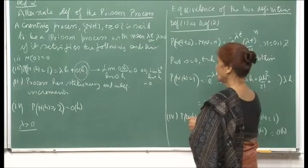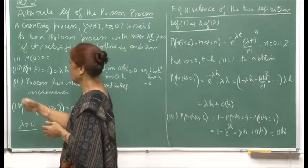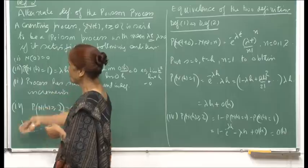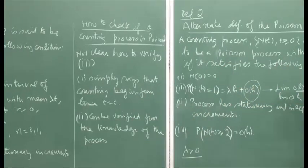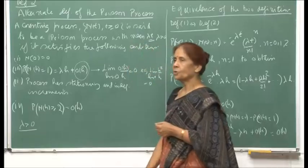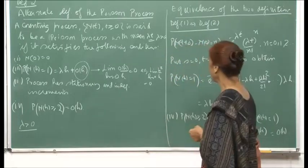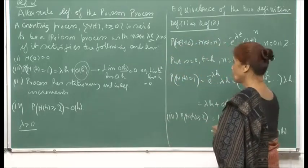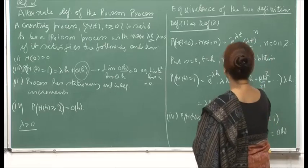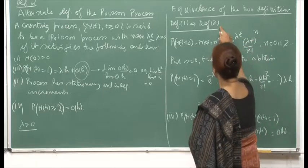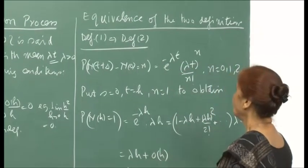The second condition is that the process has stationary and independent increments. These two properties we require for the counting process to be called Poisson. Obviously, since both definitions describe a Poisson process, we should be able to show that the two definitions are equivalent. I will show both directions: Definition 1 implies Definition 2, and then Definition 2 implies Definition 1.